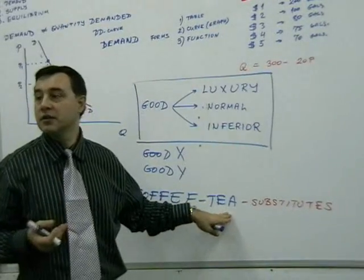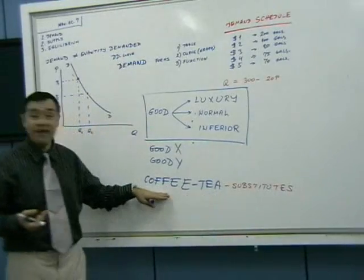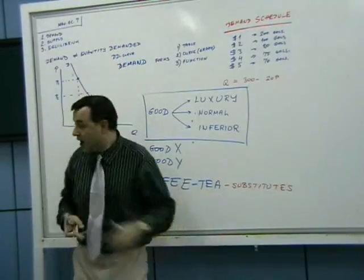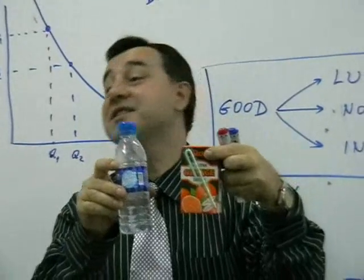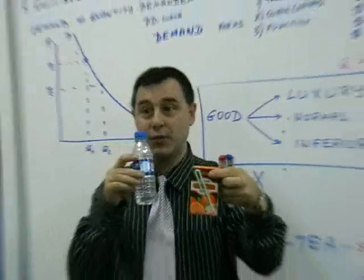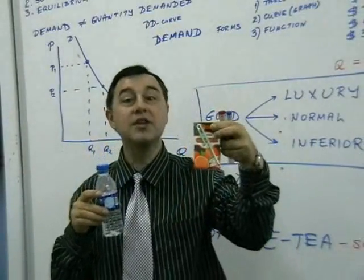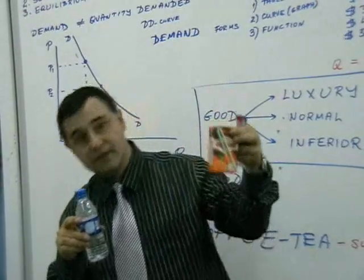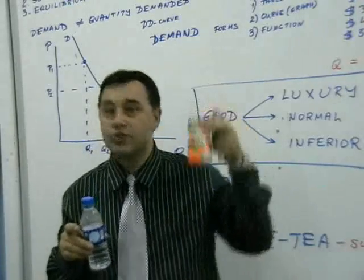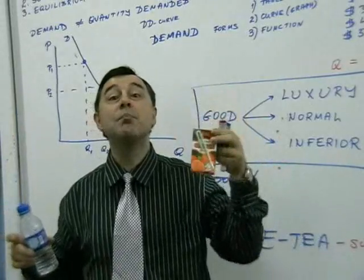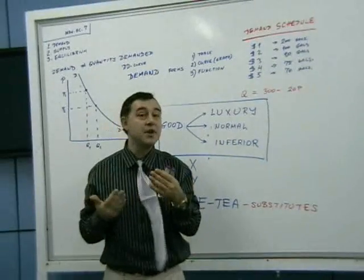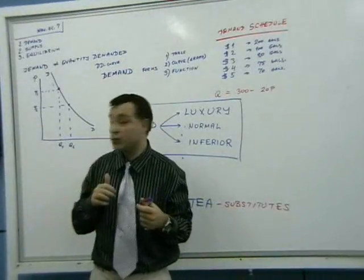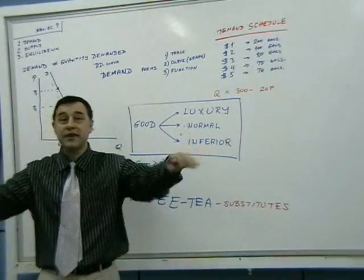Substitutes are intuitive: consumption of one naturally reduces consumption of the other — if you have one, you don't need as much of the other. For example, juice and water are almost perfect substitutes — if I drink a lot of water I drink relatively little juice, and vice versa. I could drink only juice for weeks with no water. I also find juice and milk to be good substitutes.